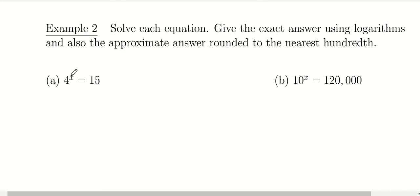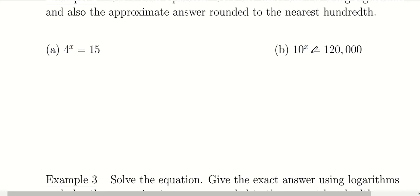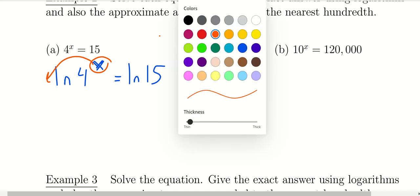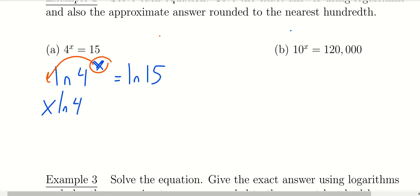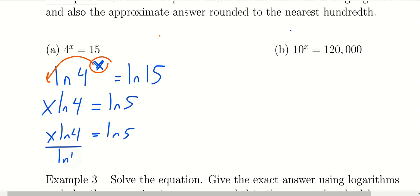Let's solve 4 to the x equals 15. Since 4 and 15 can't be written as the same base, we apply the natural log to both sides: ln of 4 to the x equals ln of 15. Using the power rule, we bring the x down in front: x times ln of 4 equals ln of 15. To isolate x, divide both sides by ln of 4, giving x equals ln of 15 divided by ln of 4. This is the exact answer.